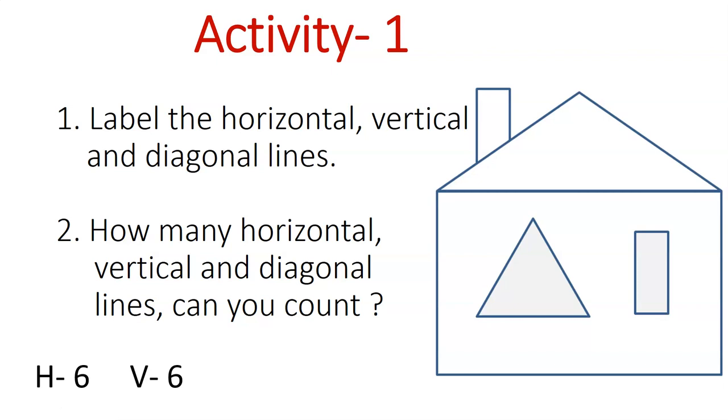Also, there are six vertical lines: one, two - two lines on the chimney, three and four on the side of the house walls, five and six on every side also of the rectangle.